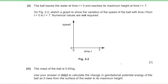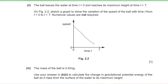Part 2: the ball leaves the water at t = 0 and reaches maximum height at t = T. Sketch a graph of speed vs. time from t = 0 to t = T. Since air resistance is neglected, acceleration is constant, so the graph is a straight line with negative slope — from the initial maximum speed of 5.6 m/s down to zero at time T. Numerical values are not required on the axes.